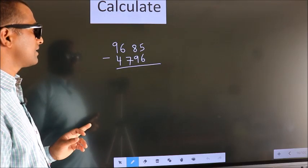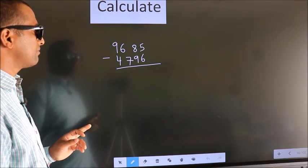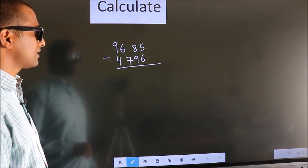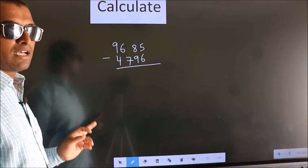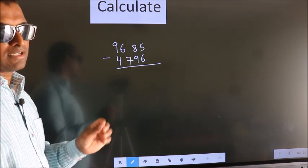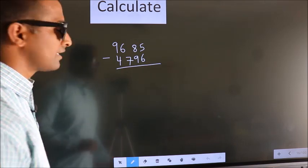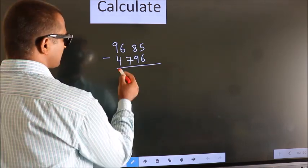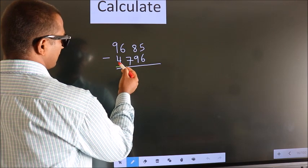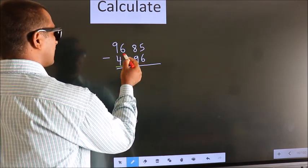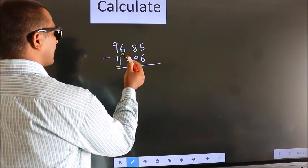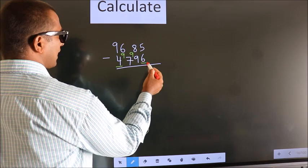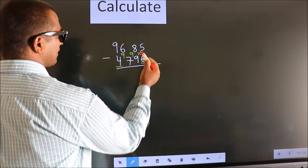Calculate 9685 minus 4796. How do we subtract faster? See, we should leave the first digit, and here we write 9, here 9, and for the last digit we write 10.